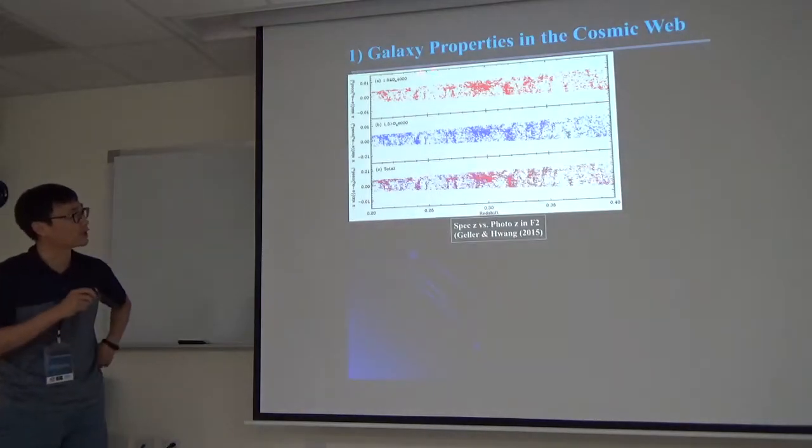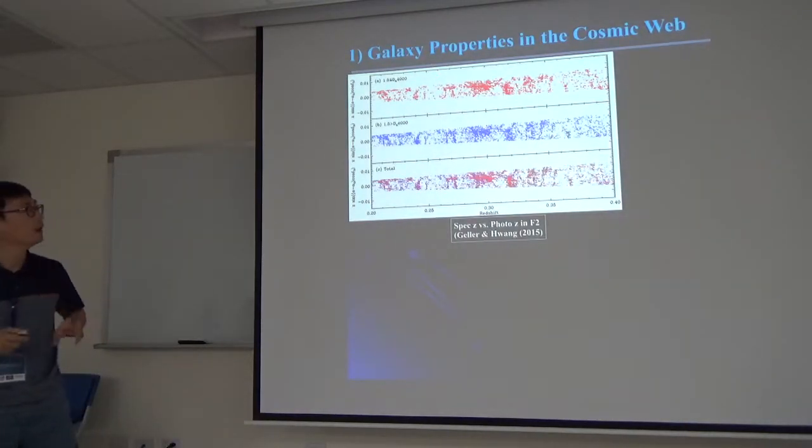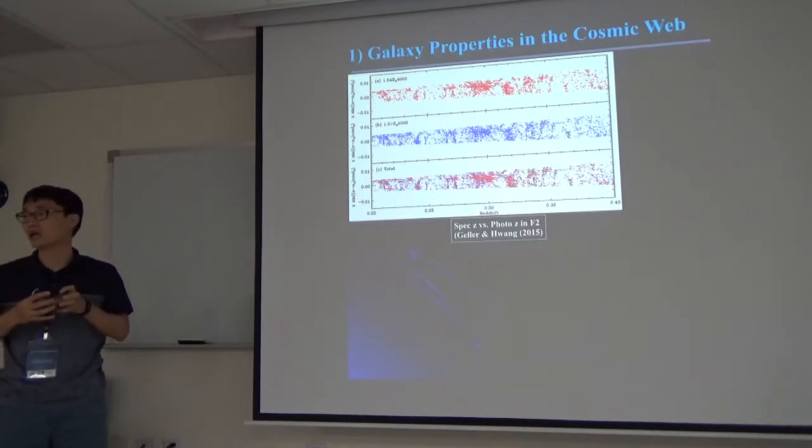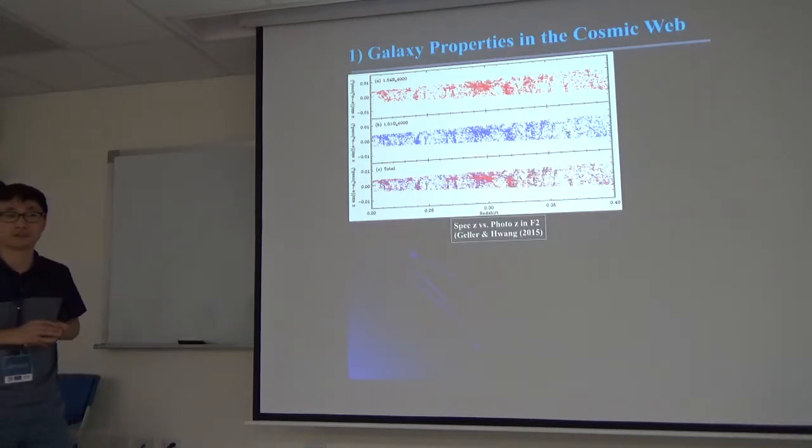The first one is the gas properties in the cosmic web. Here, this is another cone diagram in the FAST FAIR2 field as a function of redshift. This panel is for red galaxies divided by their different optical spectra. These are blue galaxies, again from different types. And these are for the total sample galaxies. You can clearly see how blue and red galaxies are distributed differently in the cosmic web.